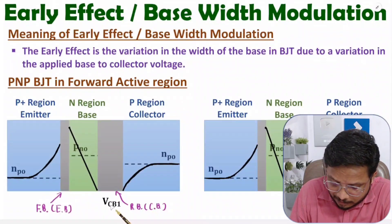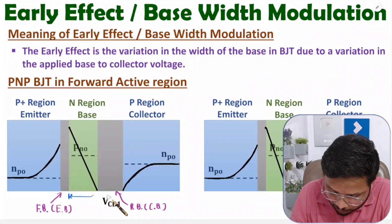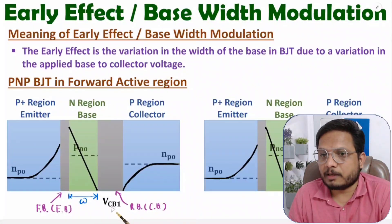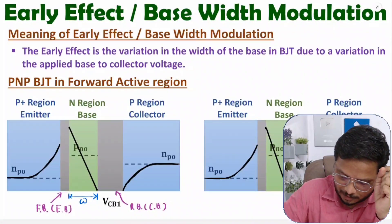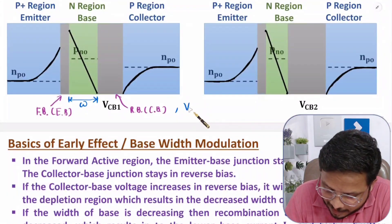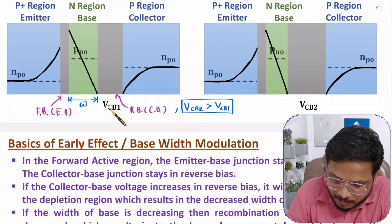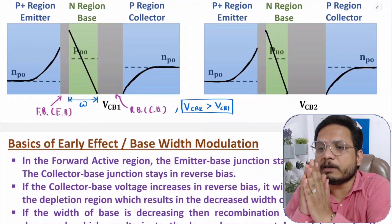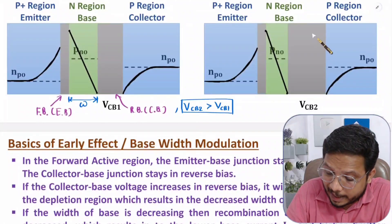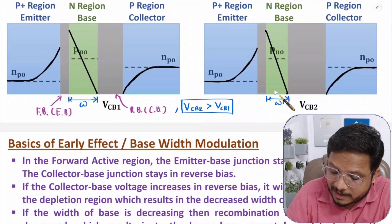Let the collector-base junction voltage be VCB1, and at this voltage the base width is W. Now if we increase the collector-base voltage to VCB2 — where VCB2 > VCB1 — and apply a higher reverse bias at the collector-base junction, the depletion region width increases. As the depletion region width increases, this new base width becomes W'.